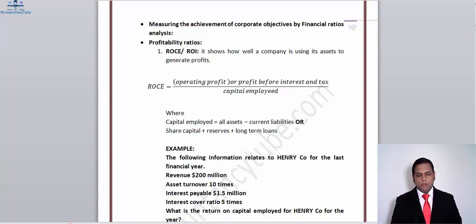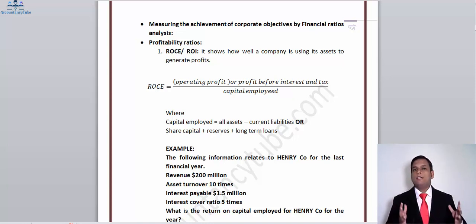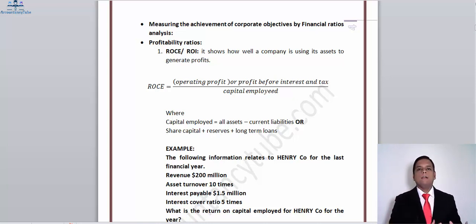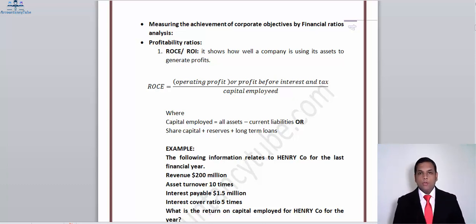We have ROCE — Return on Capital Employed, also known as ROI, Return on Investment. It shows how well the company has utilized its assets to generate profit. The formula is profit before interest and tax (operating profit) divided by capital employed. Capital employed includes not only equity capital but also debt capital. The logic is that we see how well the company has generated profits using the same proportion of assets year by year, and we can also compare it with the industry average.